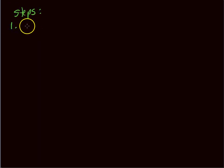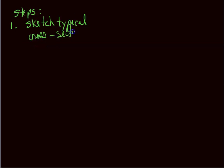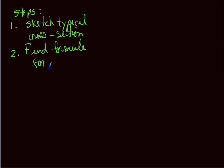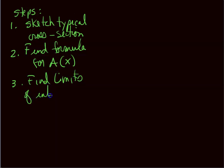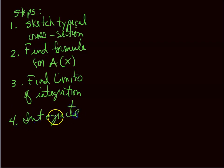The steps are: first, sketch a typical cross-section. Second, find the formula for the area — the A(x) function. Third, find the limits of integration — that's a and b. Finally, integrate: the integral from a to b of A(x) dx.